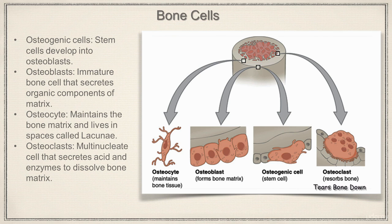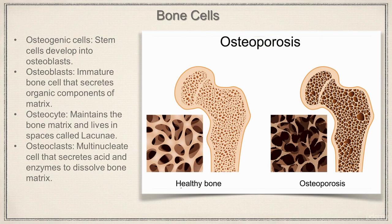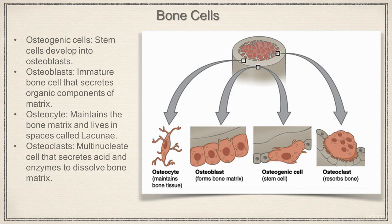Normally osteoclasts and osteoblasts work together — as osteoclasts tear bone down, osteoblasts build bone up, and they usually maintain a pretty good balance. However, if the osteoclasts are doing more work than the osteoblasts, the osteoclasts will start stripping away a lot of bone. If we strip away more bone than we're adding, we can develop a condition called osteoporosis, which is very severe, makes the bones brittle, and they can break quite easily.